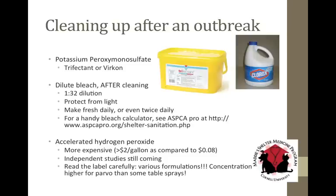Accelerated hydrogen peroxide: some shelters are using it, and it does have a shampoo variety for bathing animals. It appears effective against parvo, but read the label carefully — there are various formulations. For example, Oxivir: if you buy the concentrate and mix it up, it is labeled against parvo. But if you buy the pre-mixed table spray — called exactly the same name — it is NOT effective against parvo. This is a critical distinction.